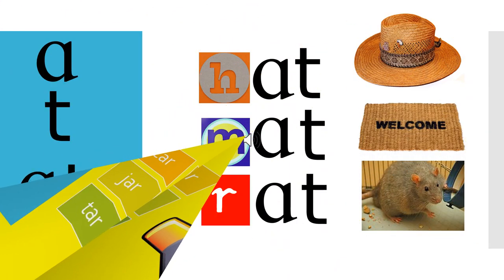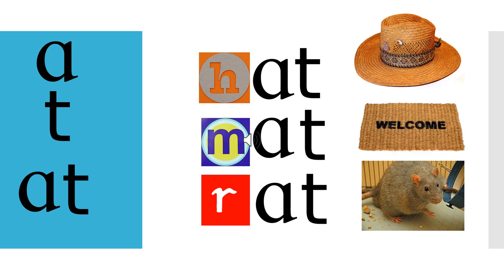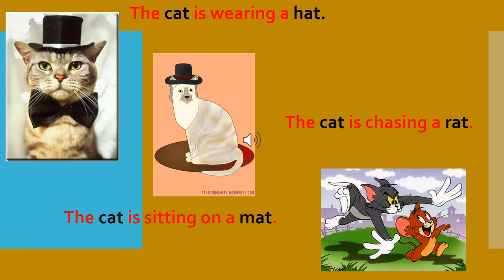A - T - At. H - At - Hat. M - At - Mat. R - At - Rat. Again: H - At - Hat. M - At - Mat. R - At - Rat. Read with me: The cat is sitting on a mat. The cat is wearing a hat. The cat is chasing a rat. Once more: The cat is sitting on a mat. The cat is wearing a hat. The cat is chasing a rat.